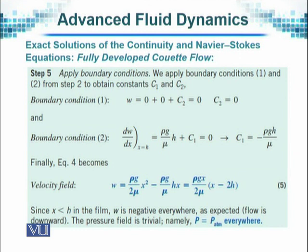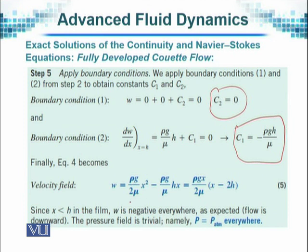As we apply the boundary conditions, we obtain that c2 is equal to 0. Similarly, when we apply the value of dw/dx when x is equal to h, we obtain that c1 turns out to be this. And therefore, our solution w looks like this.